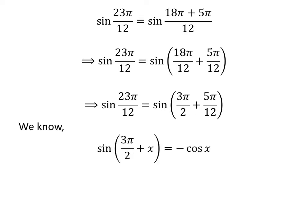We know the trigonometry identity: sine of 3π/2 plus x is equal to minus cosine of x. The proof of this identity is explained in the video appearing in the upper right corner, and the link is also given in the description. Applying this identity gives us sine of 23π/12 is equal to minus cosine of 5π/12.